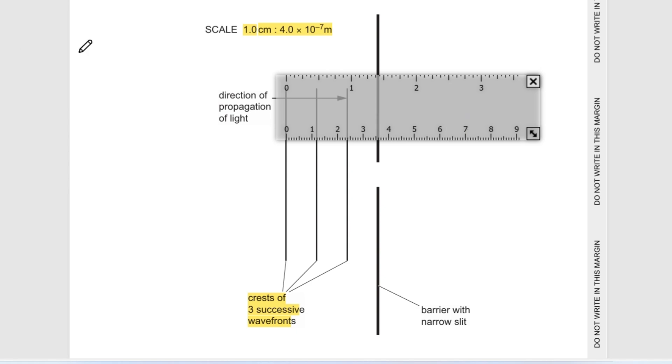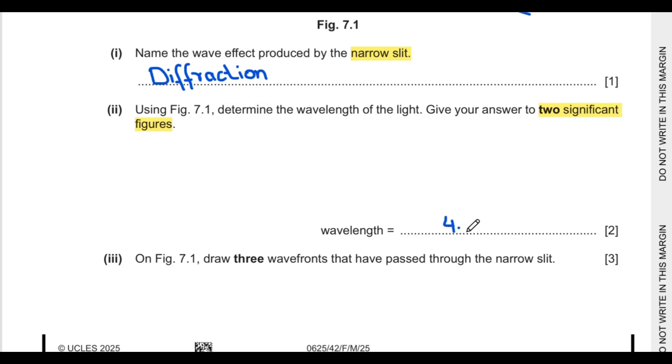Second part says using figure 7.1 determine the wavelength of the light to two significant figures. Wavelength is the distance between two consecutive crests. I will measure the distance between two consecutive crests using my scale. The distance is 1.2 centimeter on the page. Using the scaling, 1 centimeter equals 4 into 10 raised to power negative 7 meters. So 1.2 centimeter equals 4.8 into 10 raised to power negative 7 meters. So the wavelength is 4.8 into 10 raised to power negative 7 meters.